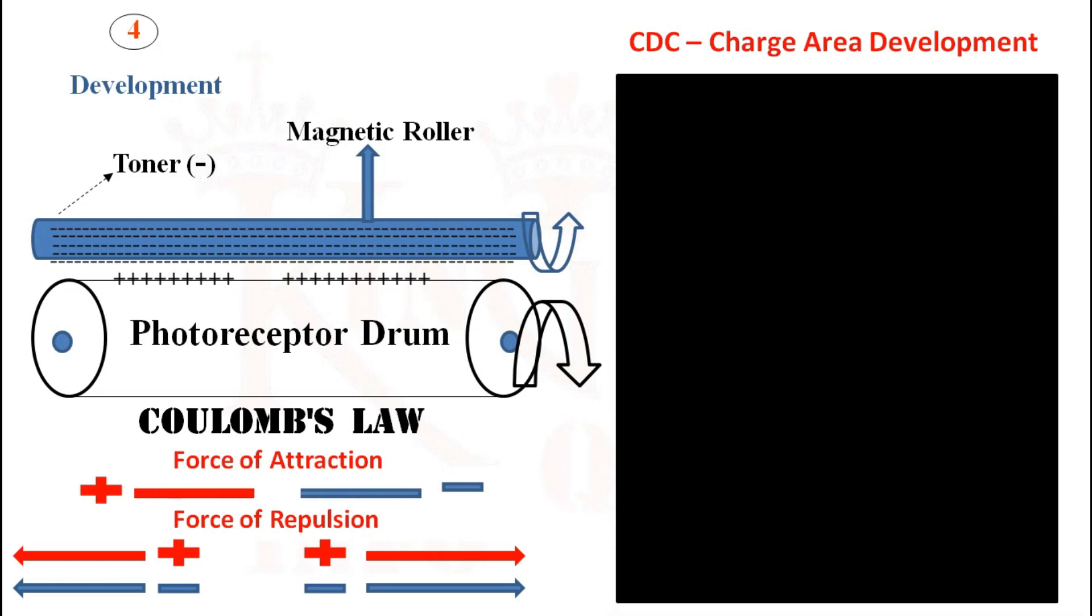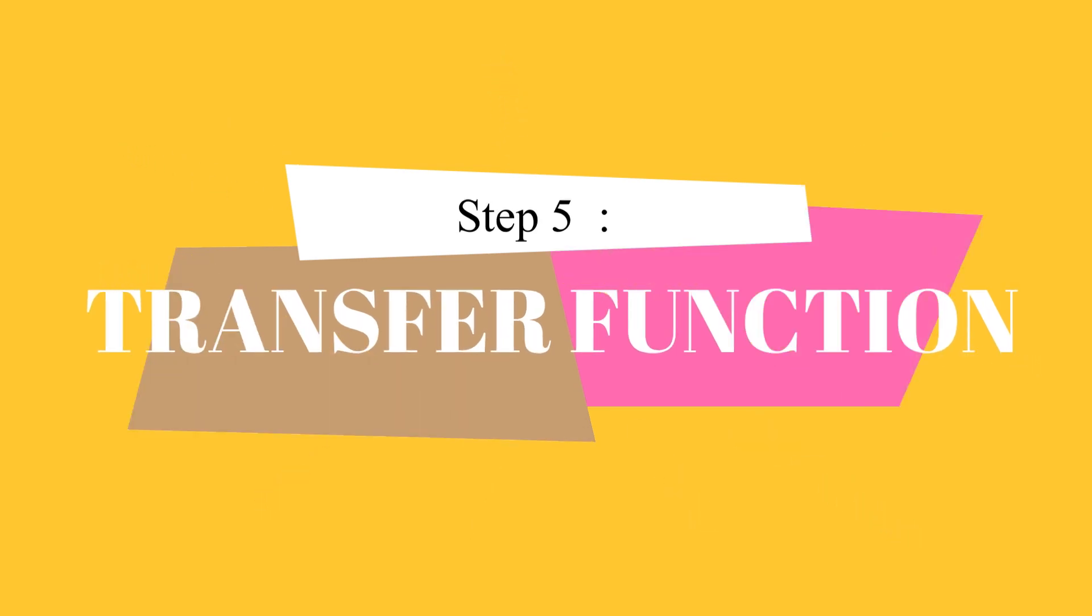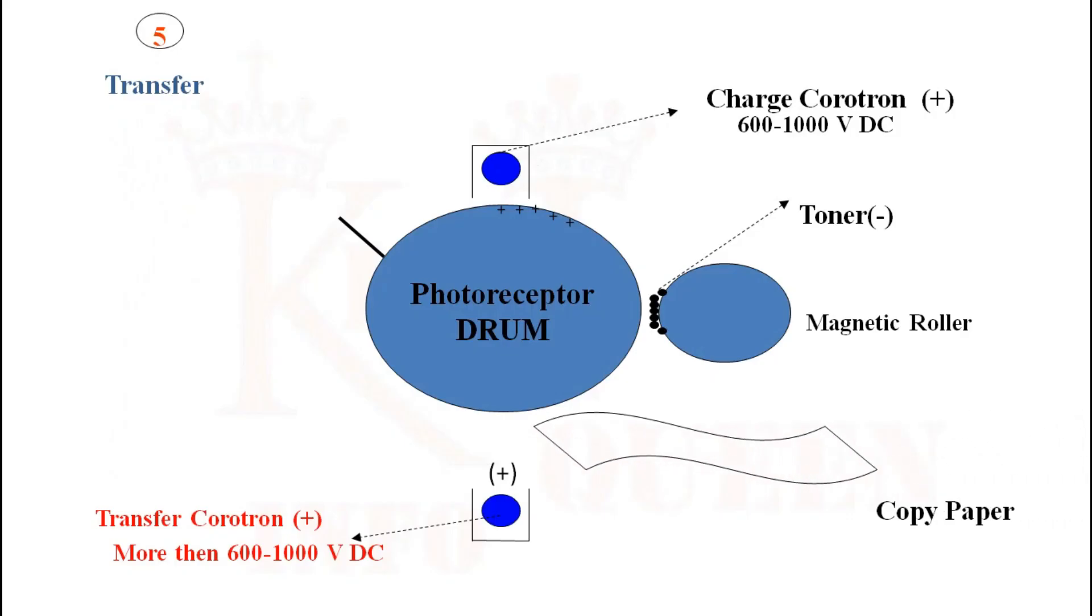Step 5: Transfer function. In this step, the copy paper is positively charged with the help of transfer corotron. The toner image from the photoreceptor is transferred onto the paper.